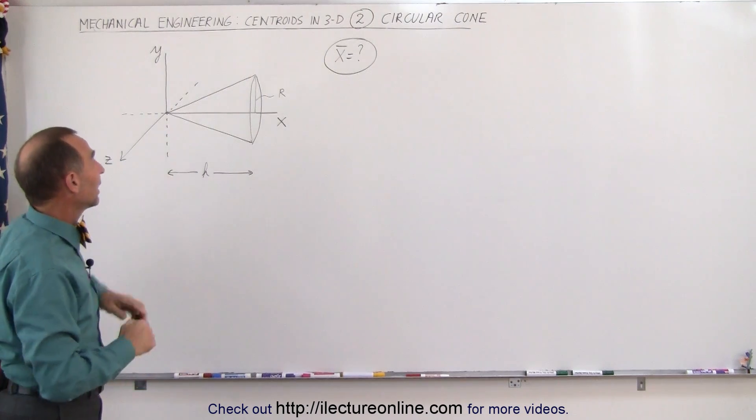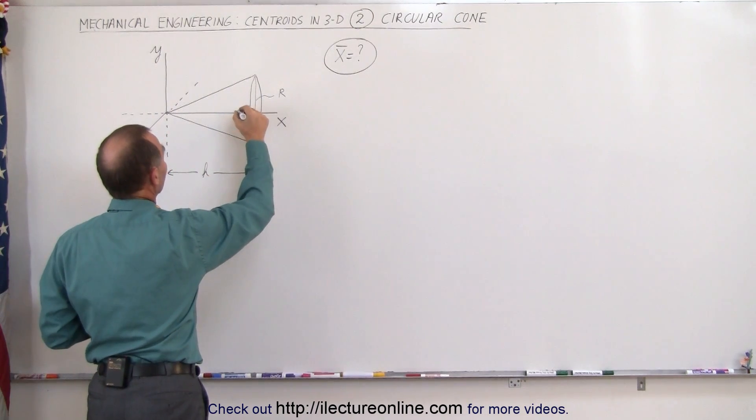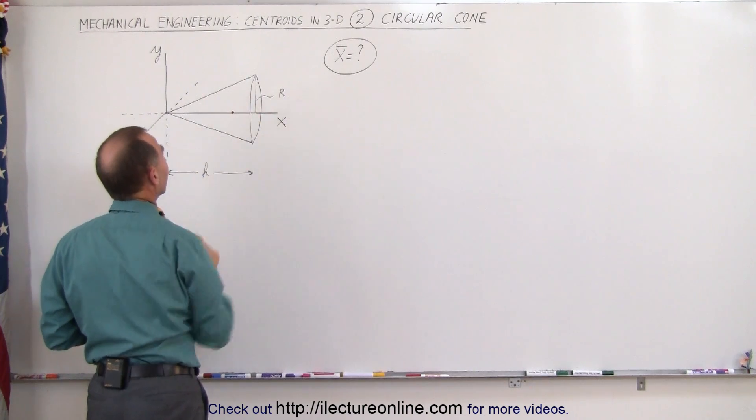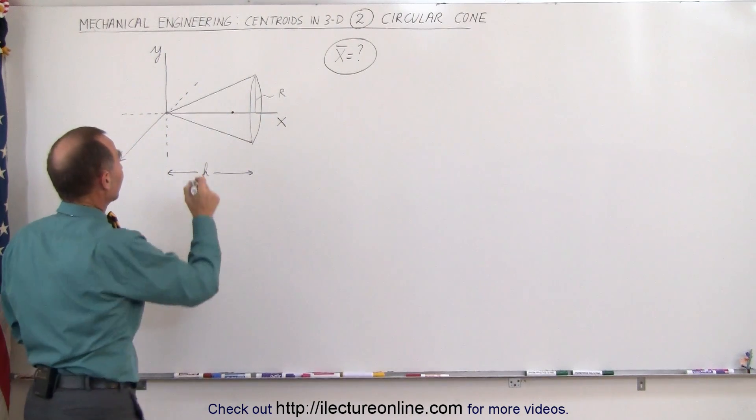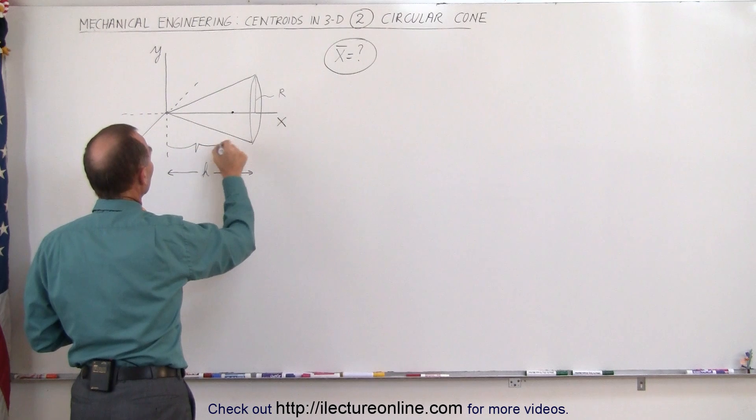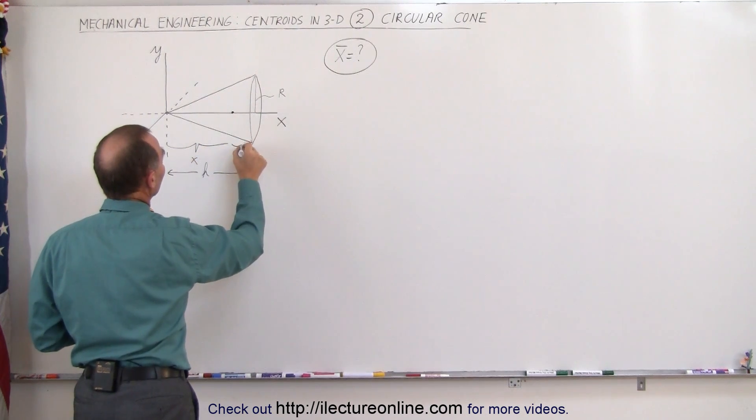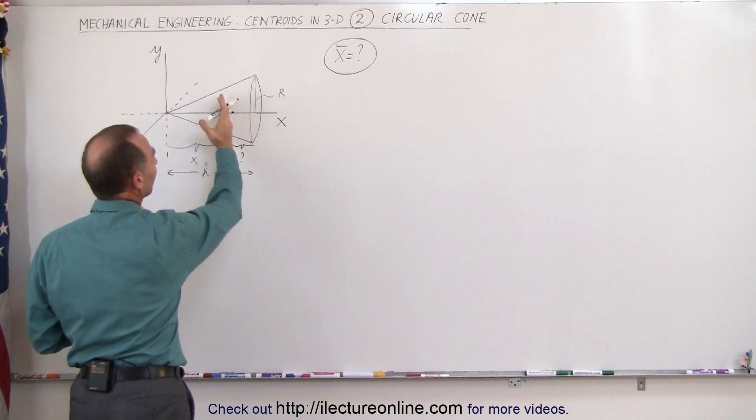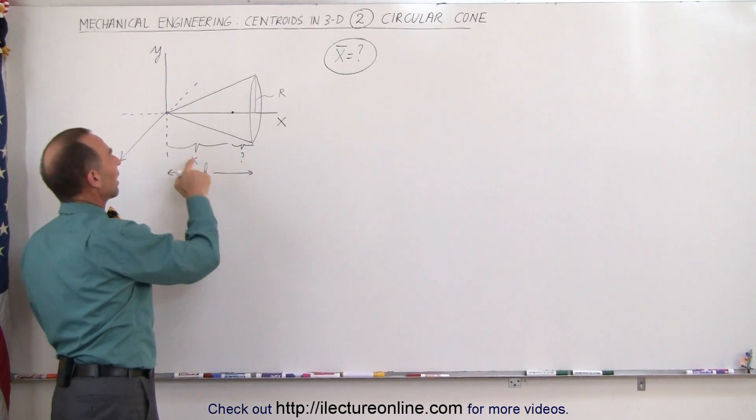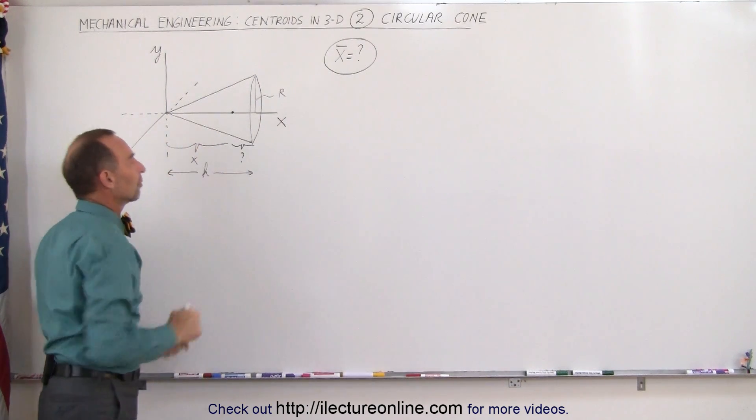What we're trying to find is the position of the centroid in the x-direction, which should be somewhere around there. The question is how far away from the origin is that? And then what we'll do also is how far away from the base will that be? The question mark is really the distance from the base to that point and we'll figure that out by first finding the distance from the origin.